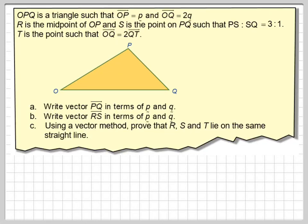So this question is about vector geometry, and then showing that basically three points lie in a straight line. So it says OPQ is a triangle such that OP is p and OQ is 2q. So annotating the diagram a bit, we've got P, OP, and OQ will be 2q.